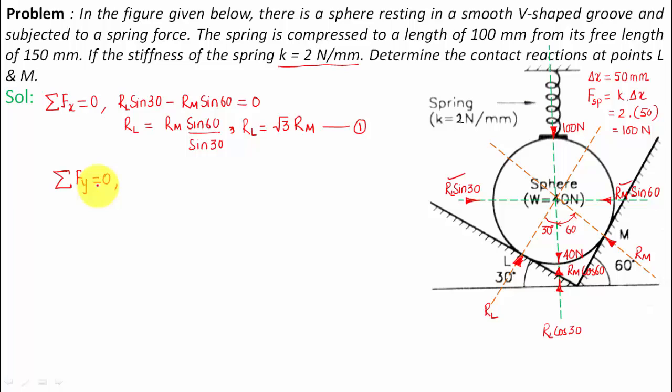Now we're going to apply this second equation of equilibrium. Summation of all the forces in y direction is equal to zero. What are the forces acting in the y direction? This is the y direction. Let us check out which forces are positive and which forces are negative. This force R_L cos 30 and this force R_M cos 60, both of them are positive.